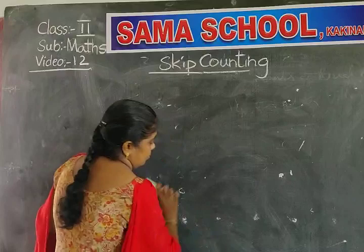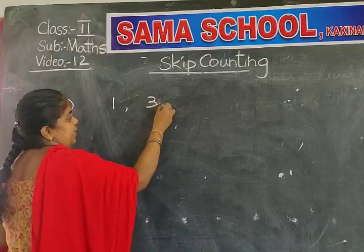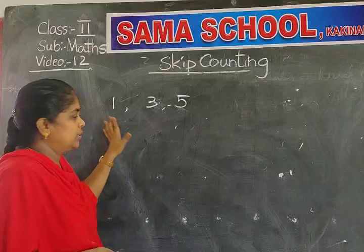This is the first example. I wrote 3 numbers: 1, 3, 5. What are the numbers? 1, 3, 5.